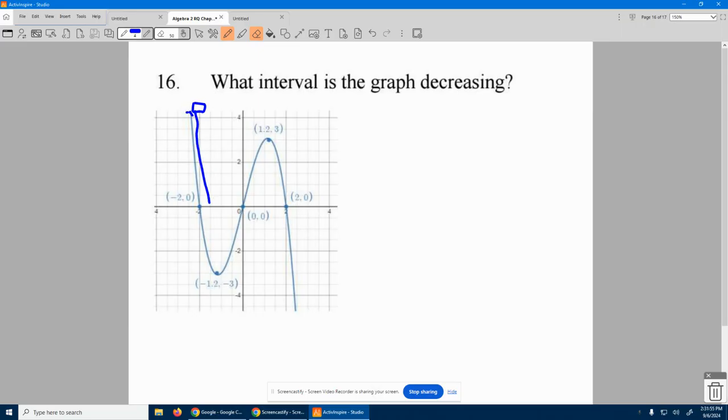Now remember, this goes to the left forever, up and to the left forever. So we've been decreasing our whole lives. It's decreasing from negative infinity until it gets to this point right here, negative 1.2, to the x-value of negative 1.2. It is decreasing to that point.